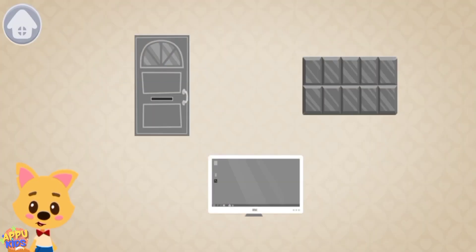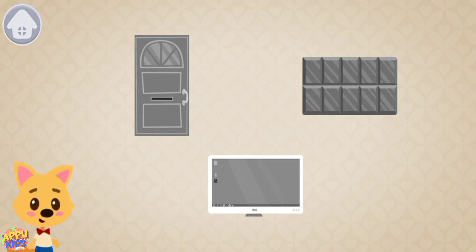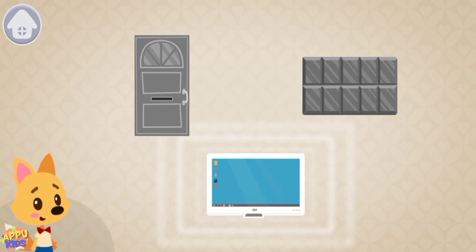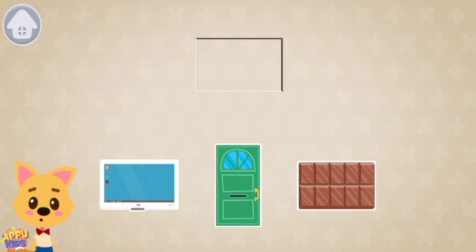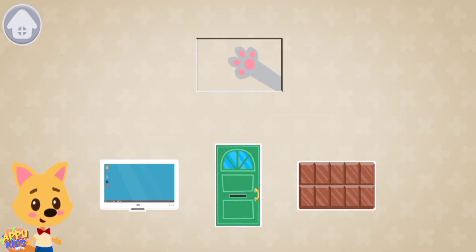Tap on all the rectangular items: monitor, door, chocolate. Drag all the rectangular items into the window above.